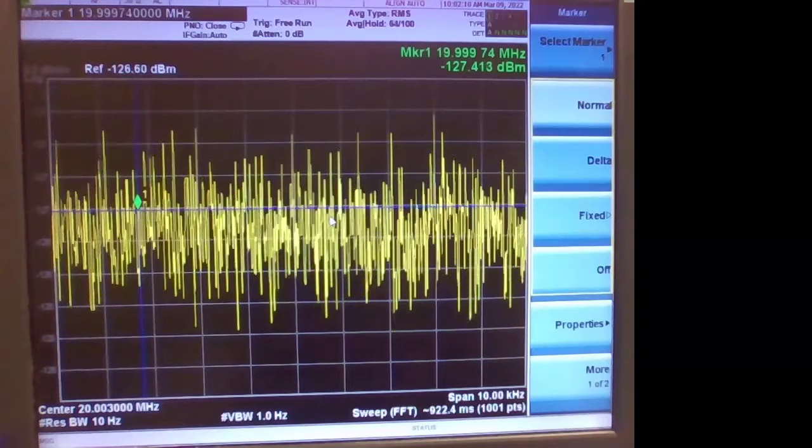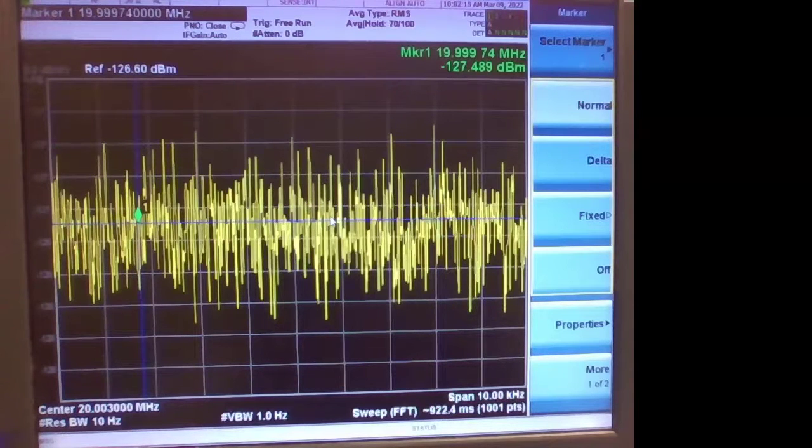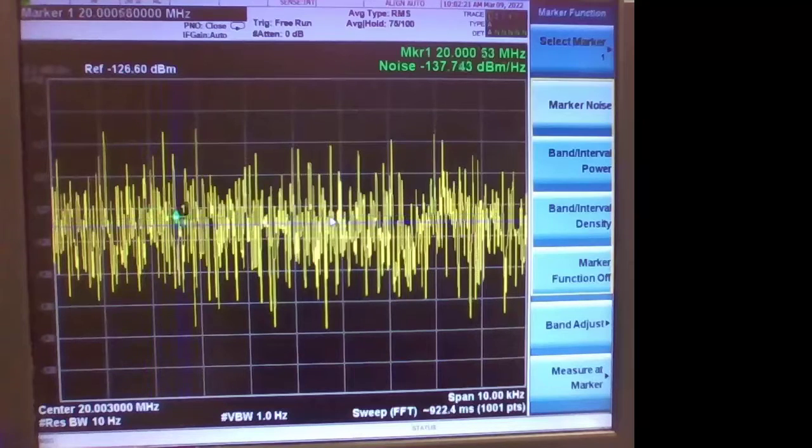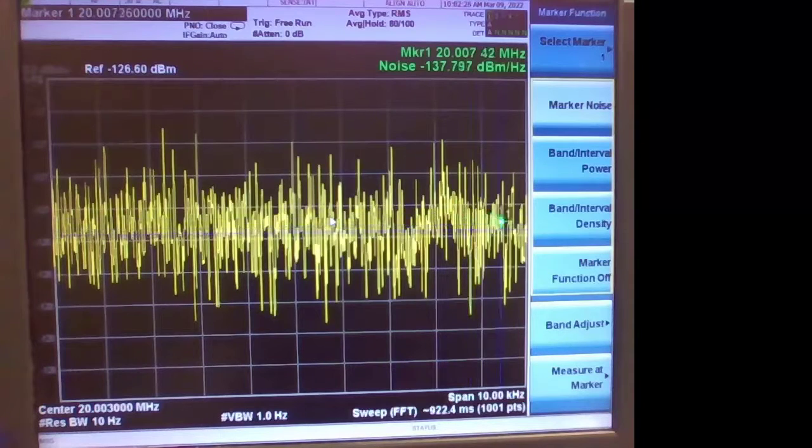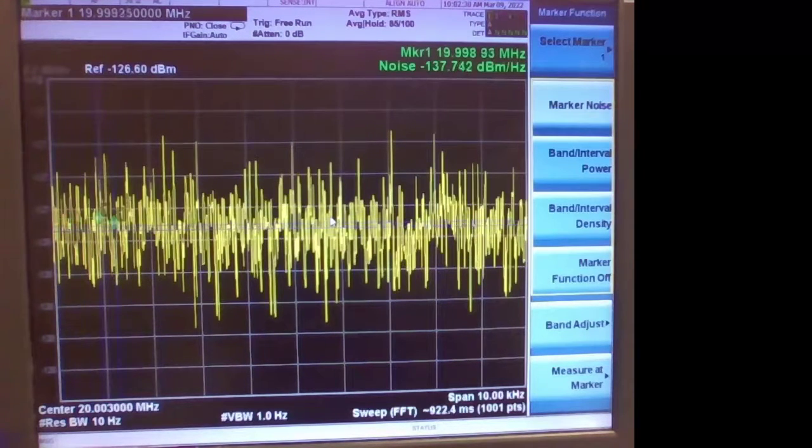The third thing you can do is on this spectrum analyzer model you turn on noise marker. You see the display is even better averaged and it's reading minus 137.7, I would call it. So if I use the noise marker on the spectrum analyzer I'll get minus 137.7 decibels.